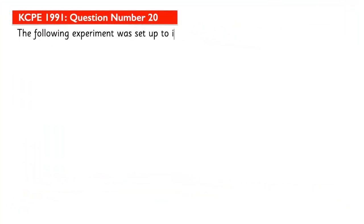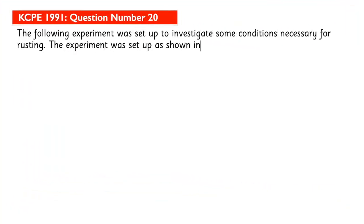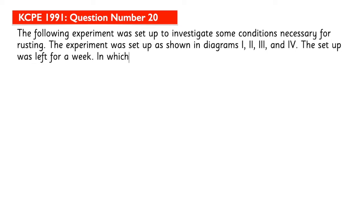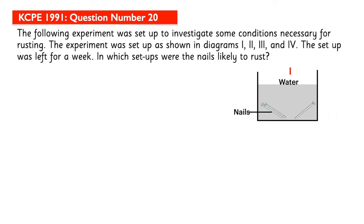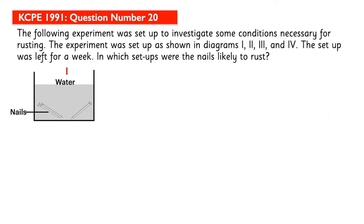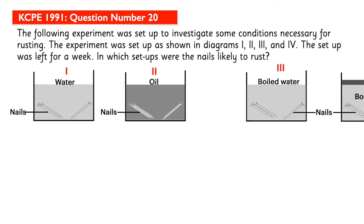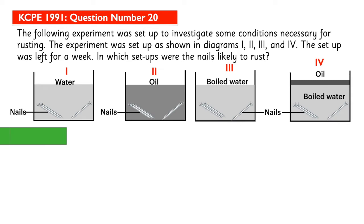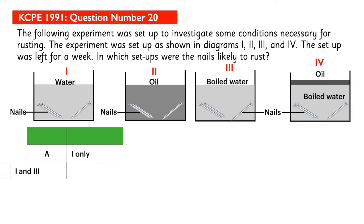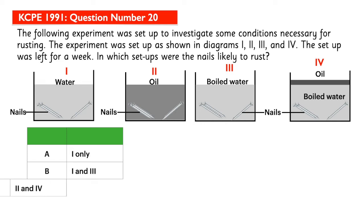The following experiment was set up to investigate some conditions necessary for rusting. The experiment was set up as shown in the diagrams labeled 1, 2, 3, and 4. The set up was left for one week. In which set ups were the nails likely to rust?